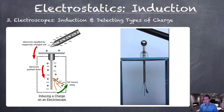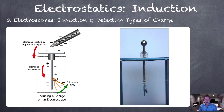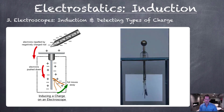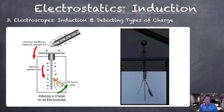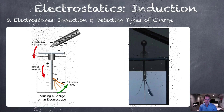There's the electroscope, and we bring the negatively charged object toward it. Notice the foils down at the bottom — one more time — the foils clearly repel. So we are inducing a charge. It's not permanent; we've just pushed the negative charges down toward the bottom of the electroscope.